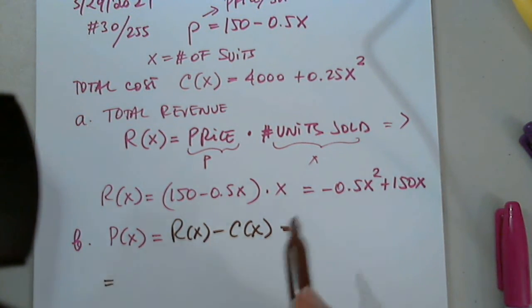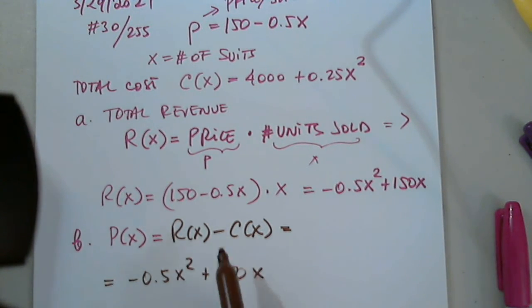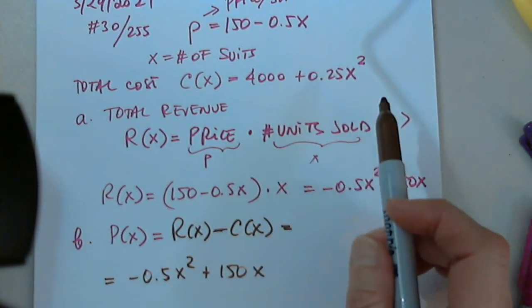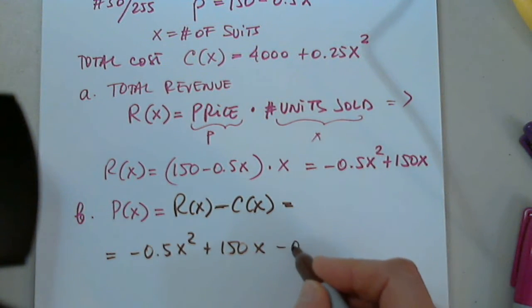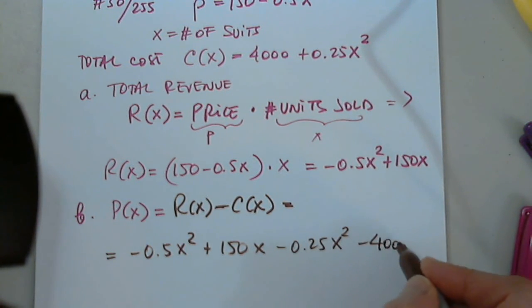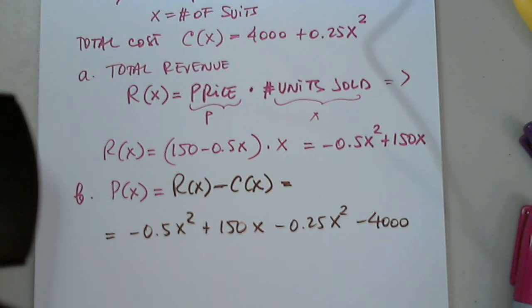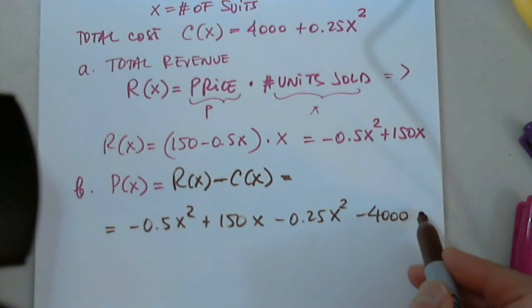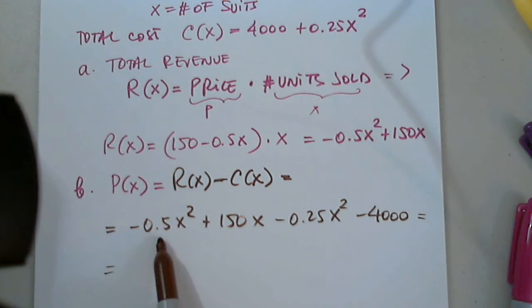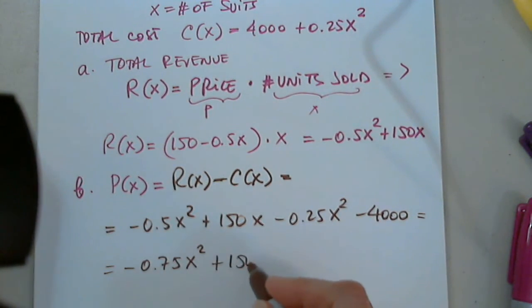So, that would be the revenue, negative 0.5X squared plus 150X. There is a minus in front of the cost function. Everything in the cost gets a negative in front of it, negative 0.25X squared and minus 4,000. Any questions so far?